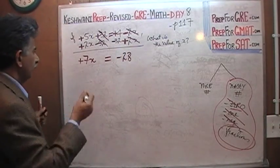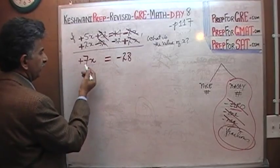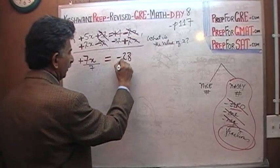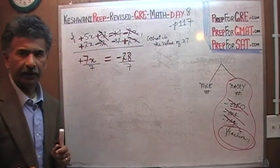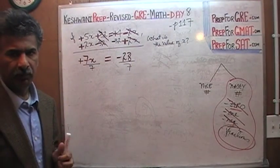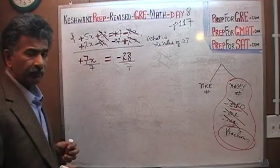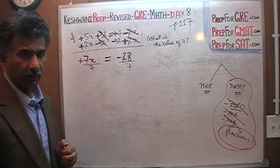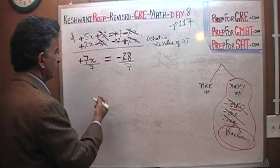Now we need to divide both sides by 7 to get the x by itself. We know that 7 of them equal negative 28. We want to find out how much one of them is worth. So if 7 of them is worth negative 28, then one must be worth this quantity divided by 7.